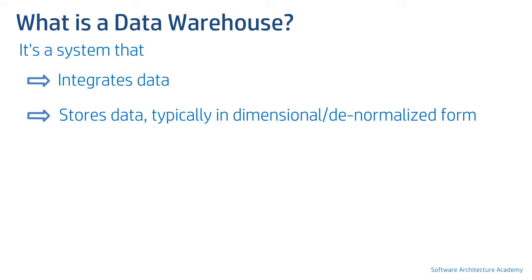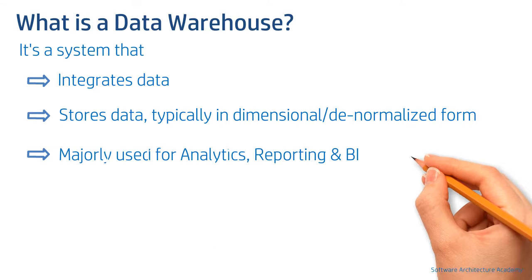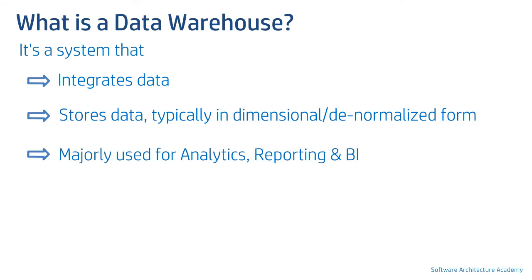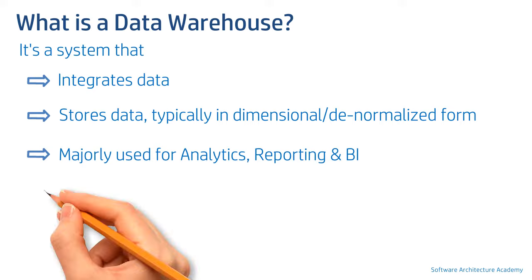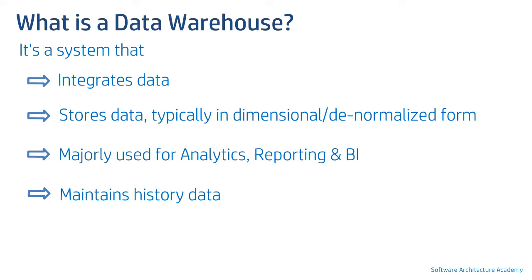This doesn't mean a data warehouse cannot be normalized — it can, but it is a less popular option and also defeats the purpose. A data warehouse is mostly used for analytics, reporting, and business intelligence. Finally, the key difference between a transactional system and a data warehouse is that a data warehouse maintains history data, which is a very powerful use of it.